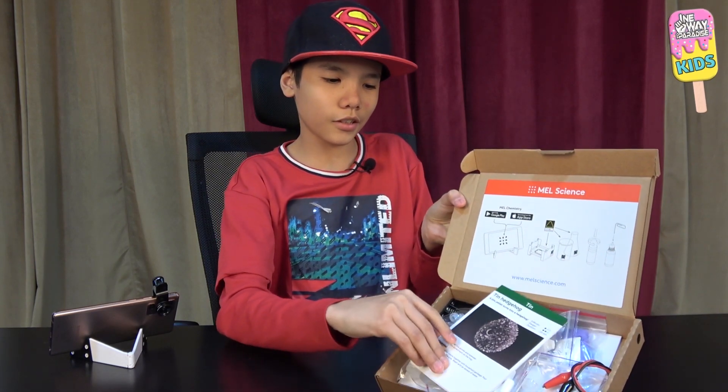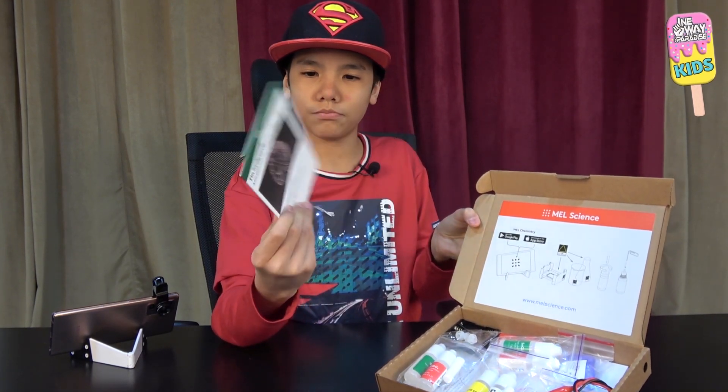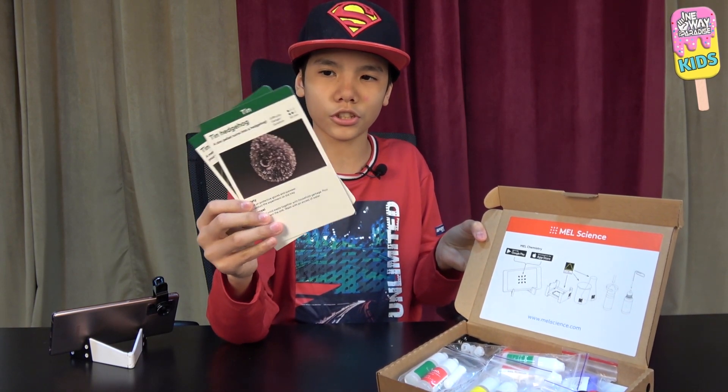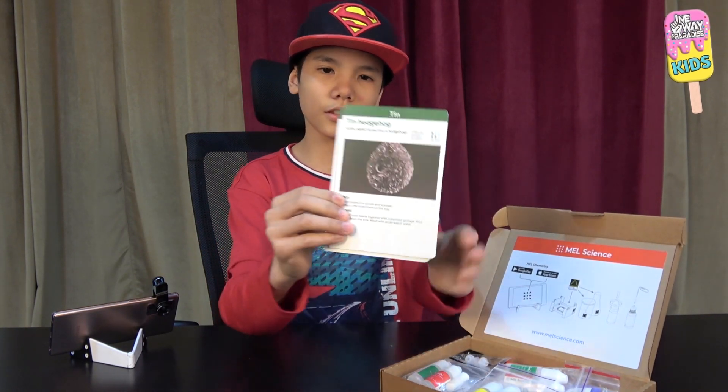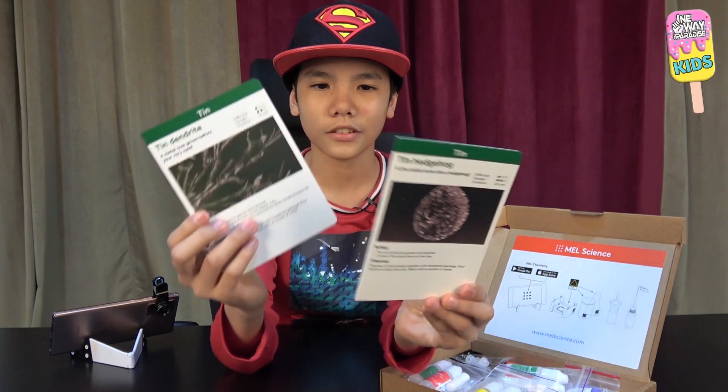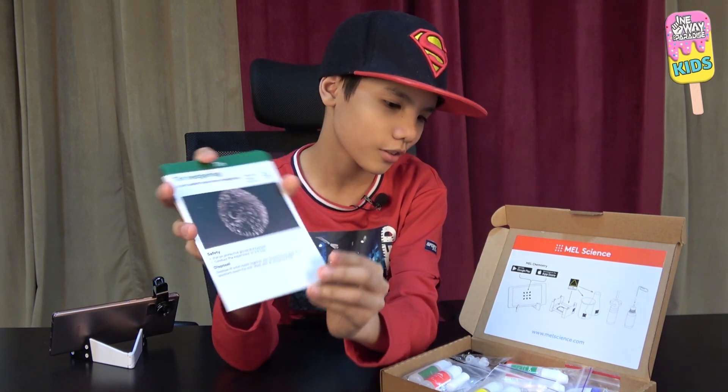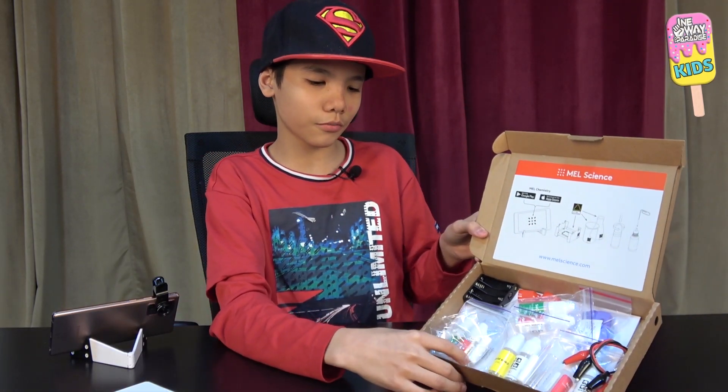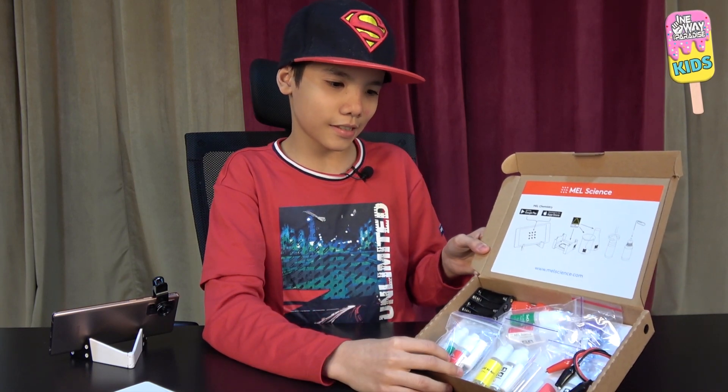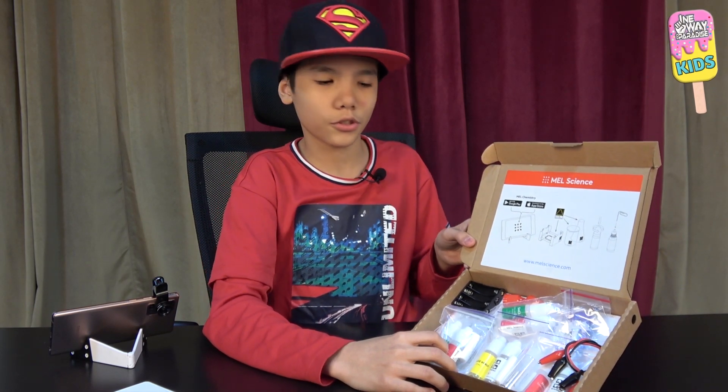These are two pamphlets of the different experiments or the instructions for the experiments. This is the tin hedgehog and this is the tin dendrite. We're going to be focusing on this one though. And here are the different materials that we need for the experiments. So without further ado let's switch the view and start the experiment.